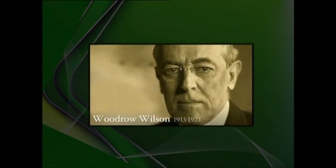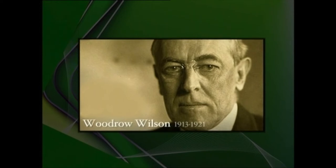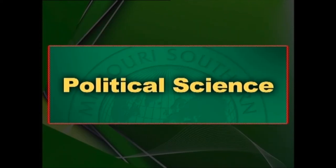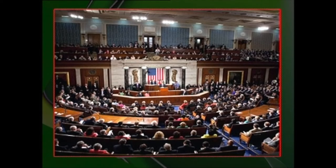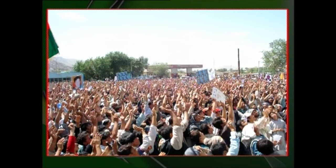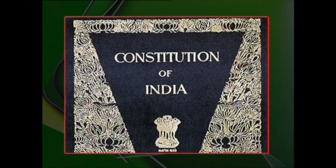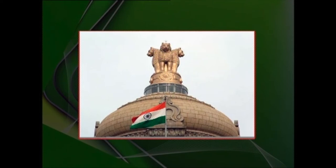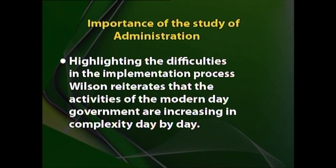Wilson's understanding is clear: in the 18th century, political scientists struggled to frame the constitution, whereas in the 19th century, significant changes in society made the implementation and execution of the constitution the basic issue. To quote him: 'It is getting to be harder to run a constitution than to frame one.' Writing a constitution had become easier because experiments were already made, whereas running the constitution is the problematic one. Wilson reiterated that the activities of the modern-day government are increasing in complexity day by day, and every day the government discovers new functions and is compelled to discharge them with efficiency.